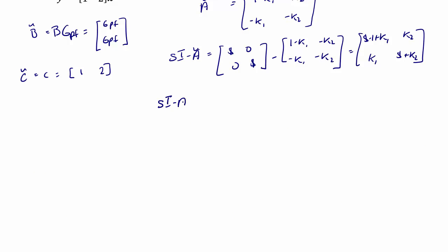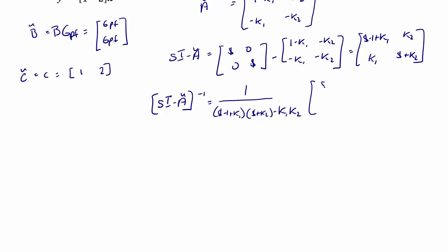And again, (sI minus A-tilde) inverse is equal to 1 over (s minus 1 plus K1)(s plus K2) minus K1·K2, times the adjugate matrix [s plus K2, negative K2; negative K1, s minus 1 plus K1].